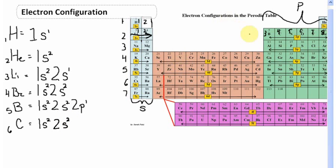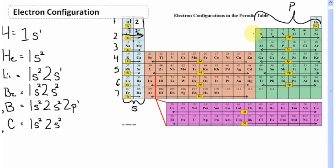The last two electrons go into the p orbital on the second energy level. Carbon is two deep into the p orbital, so it's 2p2. The full electron configuration of carbon is 1s2 2s2 2p2.